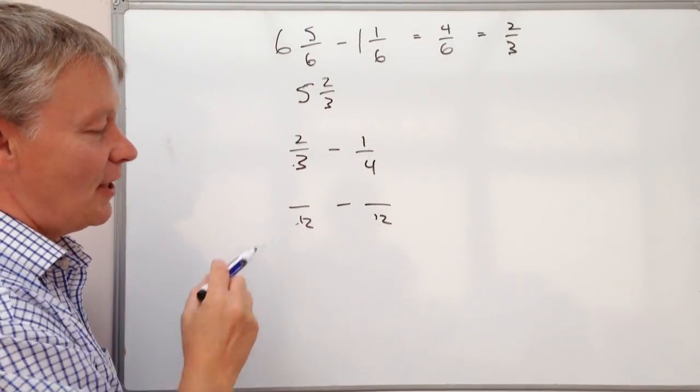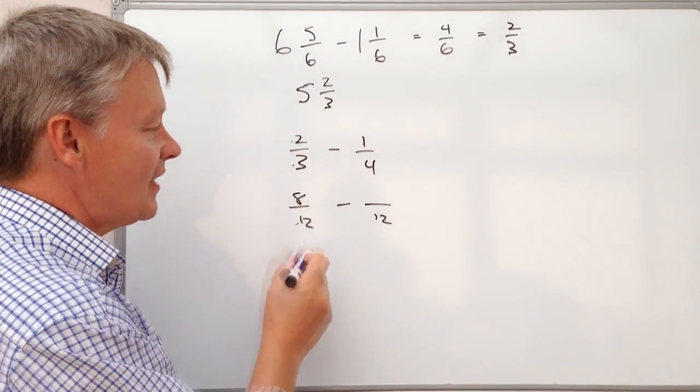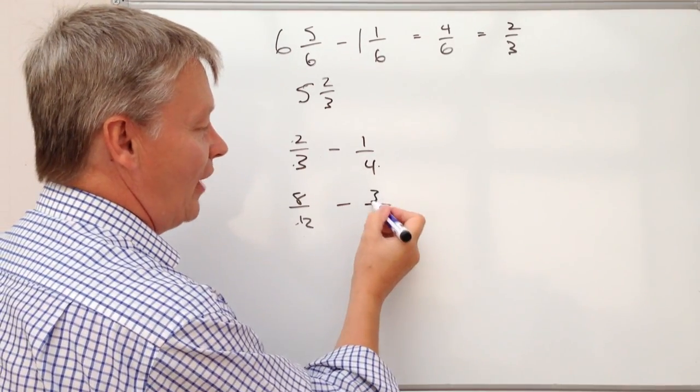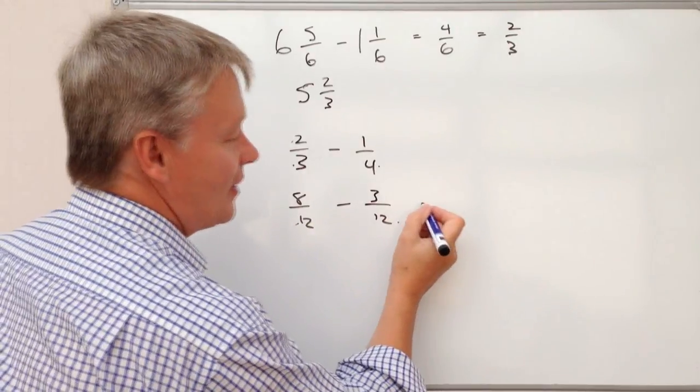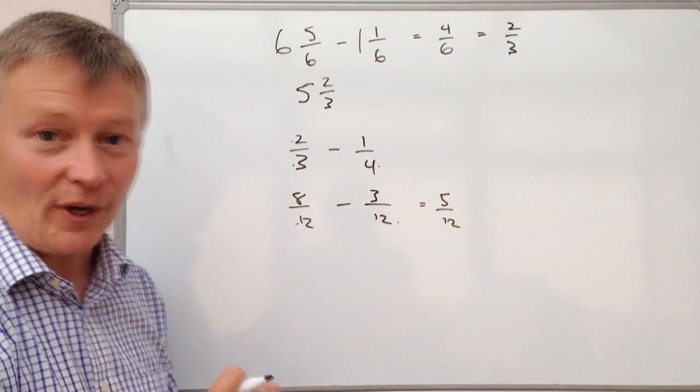So 3 times 4 is 12, so I'm going to multiply the top by 4, which is 8. And 4 times 3 is 12, so I'm going to multiply the top by 3. So 8 take away 3 is going to be 5/12, which is the answer to this question.